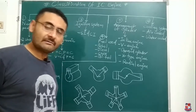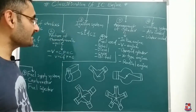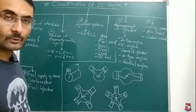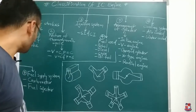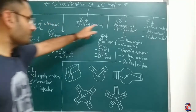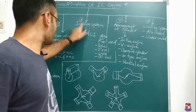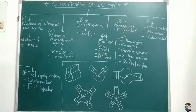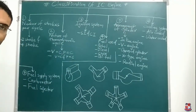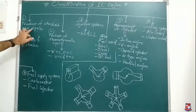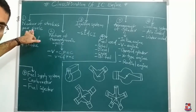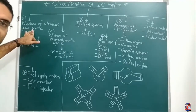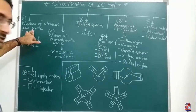So, how will we start the classification? Basically, as you can see over here, there are a total of 7 types of classifications for the case of IC engine. IC engines are classified — IC engine stands for internal combustion engine.